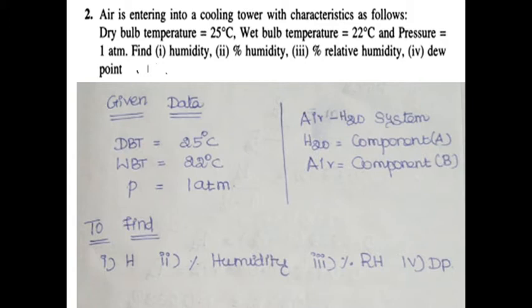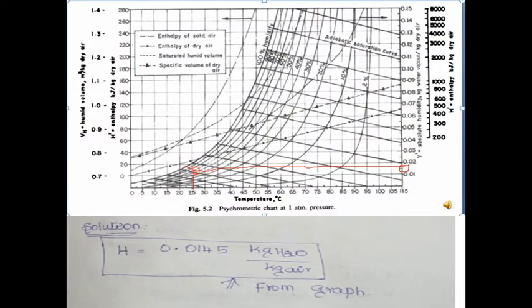The objectives of this problem are: first, absolute humidity (capital H); second, percentage humidity; third, percentage relative humidity (percentage RH); and last, condensation temperature, or dew point (DP).